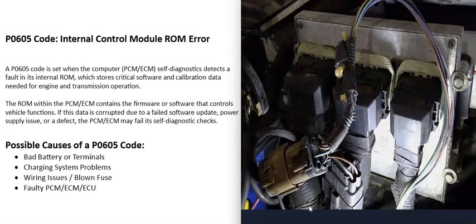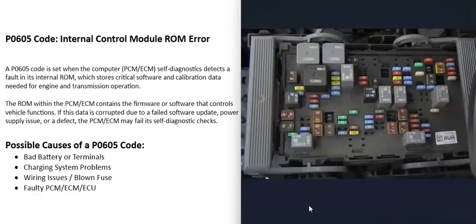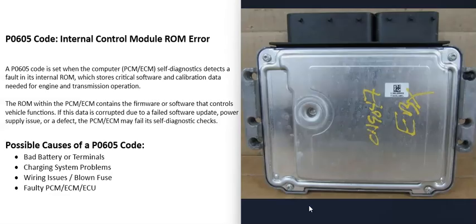The next possible cause is a wiring problem or a blown fuse. Any kind of problem inside the wiring, especially with the power wires, is going to cause problems. Go through and check for any computer-related fuses — anything labeled PCM, ECM, or ECU — and be sure those are all good. The last thing on the list is some kind of problem with the computer itself, which can be called a powertrain control module, engine control module, or engine control unit.